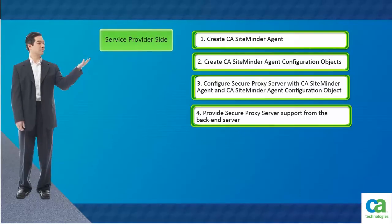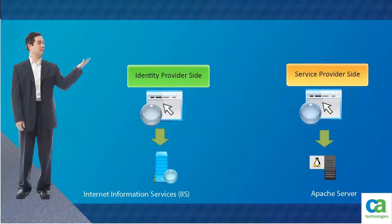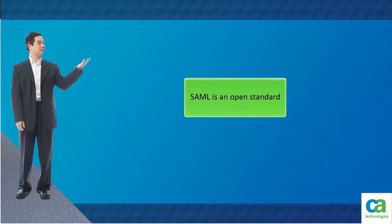One side is generating the token and the other side is consuming the token. In the identity provider side, IIS is used as backend server. Similarly, in the service provider side, you may have a proxy server in a Linux machine where Apache server is working as the backend server. Remember, SAML is an open standard. We can do this with any solution that is SAML compliant.